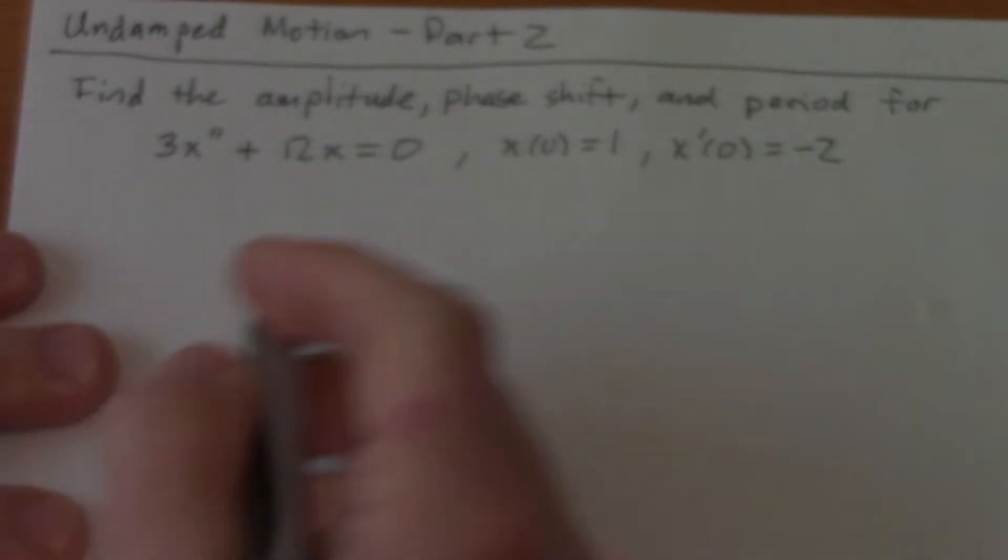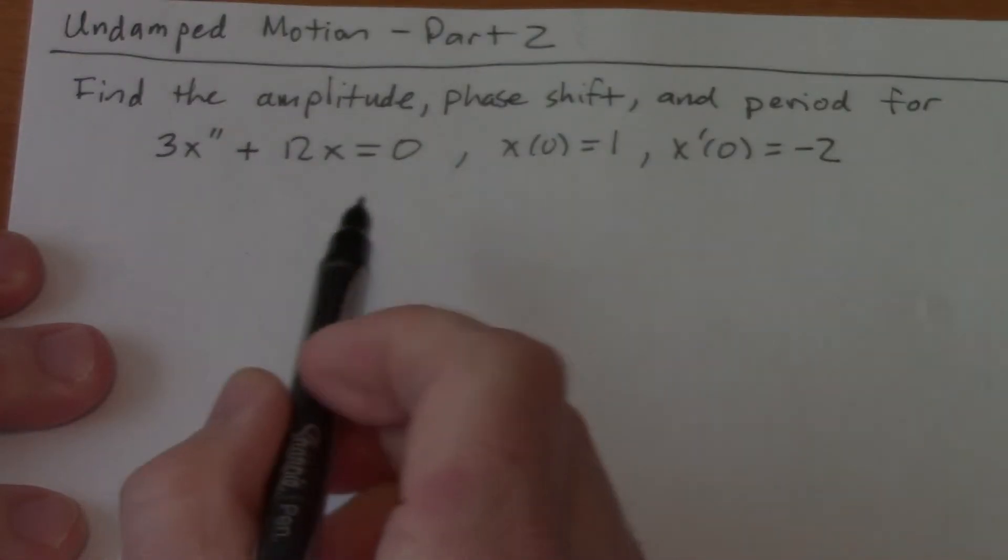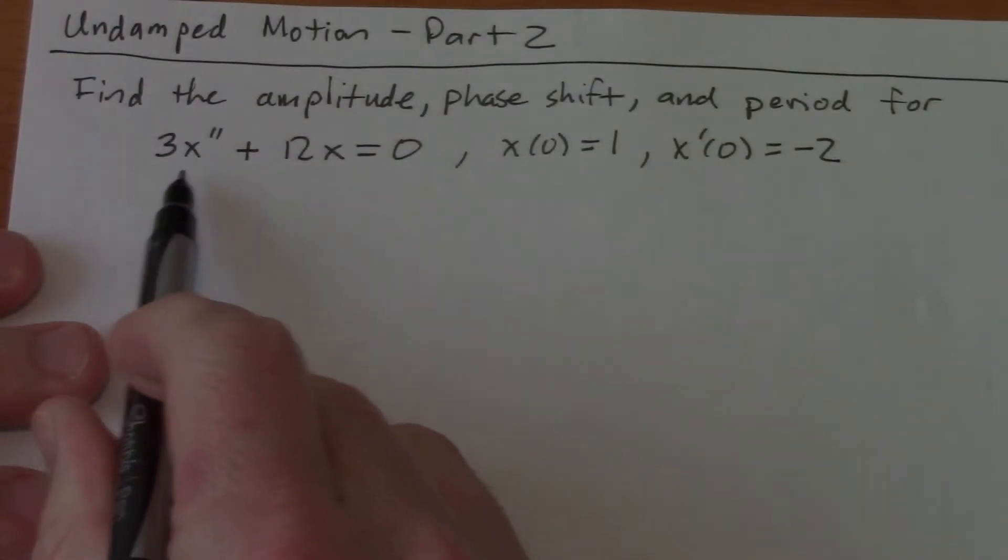So this is my IVP. So I've got 3x double prime plus 12x equals 0. Now in some of the questions that you're going to see, they're going to have you figure out the m and the k.